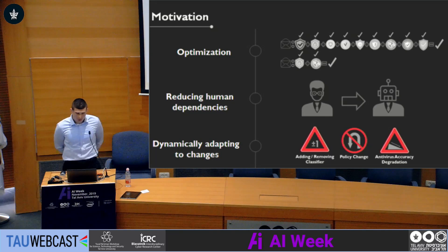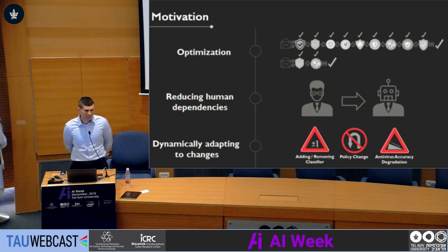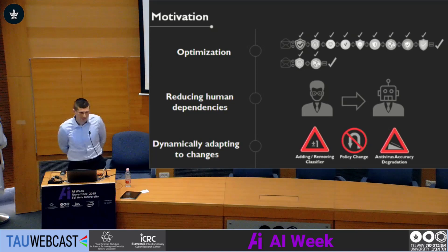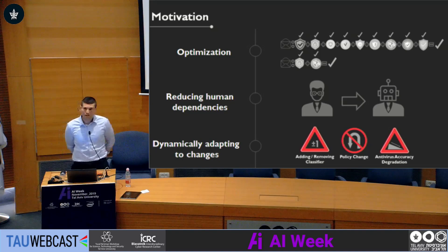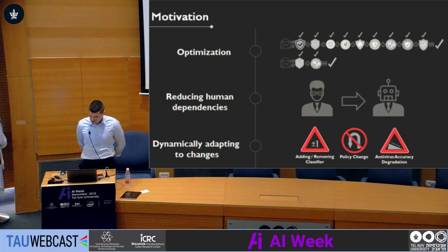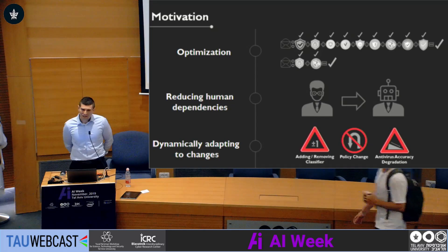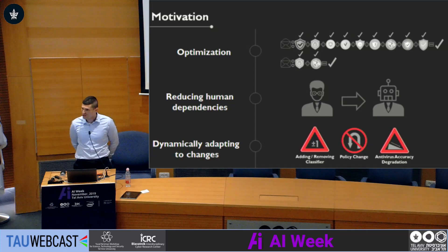Our research has three main motivations. The first is reducing classification costs while keeping accuracy as high as possible. Second, we would like to reduce dependency on humans — since humans need to be involved in any process in the classification environment, such as changing classifiers or adjusting thresholds, we want to reduce human interaction to the bare minimum. Third, our objective is the ability to dynamically adapt to changes: adding or removing classifiers, changing the security policy, or handling changes to individual classifiers — all quickly and accurately.